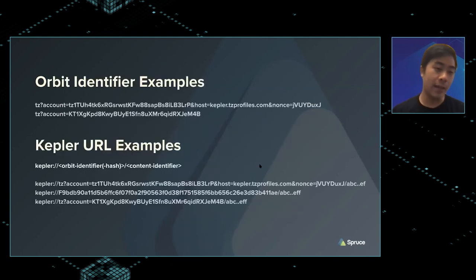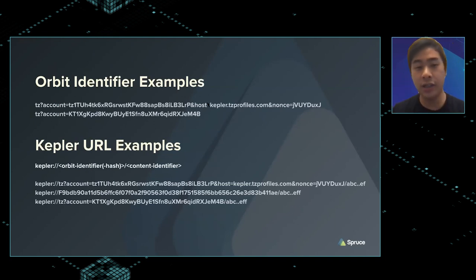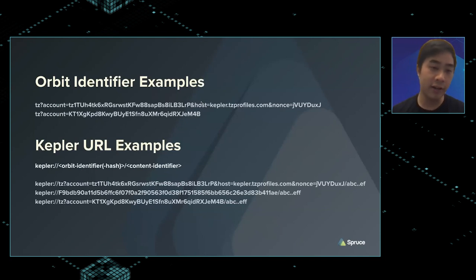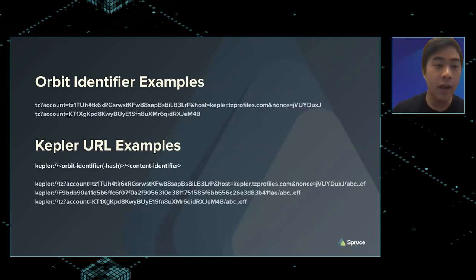Here are some examples of orbit identifiers. This one is based on the Tezos blockchain — it has an account and a predefined host. You can have implicit parameters as part of the orbit identifier, so you don't even have to deploy a smart contract to have some strict defaults. You can also use a smart contract and source it from there.